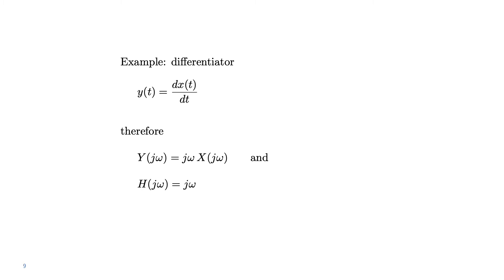Another example of interest is the differentiator system — a system whose output is the derivative of the input, so y(t) = dx(t)/dt. Therefore the Fourier transform of the output Y(jω) is jω·X(jω), because of the differentiation property we've seen before. As a consequence, the frequency response H(jω), which can be seen as the ratio Y(jω)/X(jω), is simply jω.